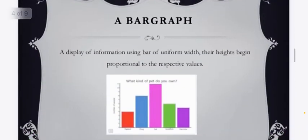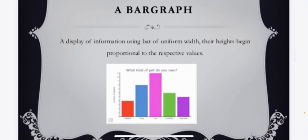Bar graph. A display of information using bars of uniform width, their heights being proportional to the respective values. So in bar graph, the width of bars should be proportional and uniform. From this we can collect information, we can read it and we can analyze it to understand the given information.